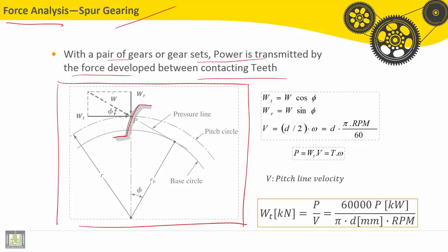Here we have the resultant force W, the radial force WR, and the tangent force Wt. The total force, or the resultant force W, is situated or located on the pressure line.